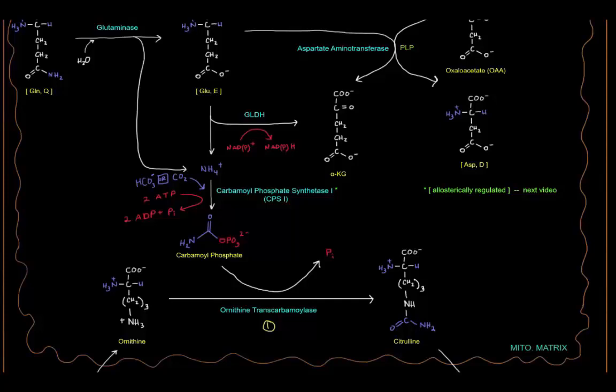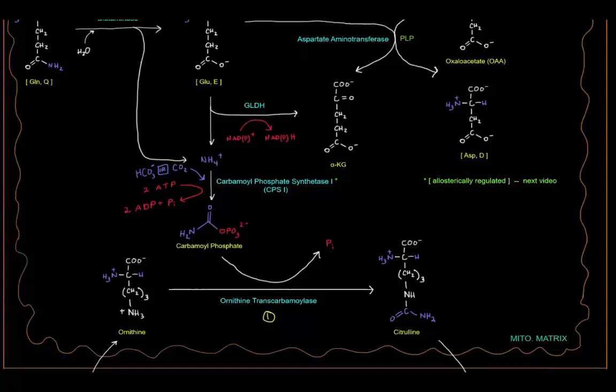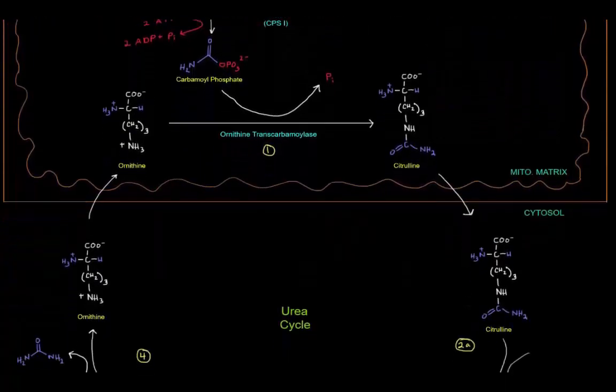Now once we have that citrulline, that citrulline is going to exit the mitochondrial matrix out into the cytosol where the rest of the urea cycle will occur.